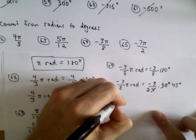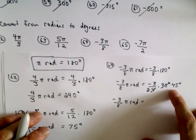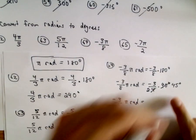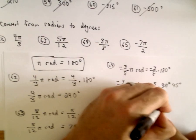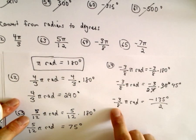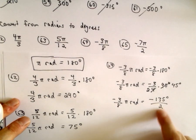So negative 3 times 45, that's going to be negative 135 divided by 2. So negative 3 over 8 pi radians is going to be equal to negative 135 divided by 2 degrees.